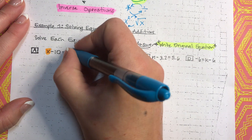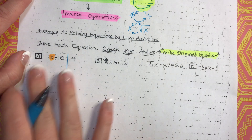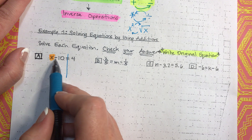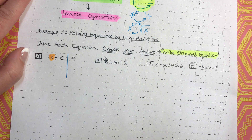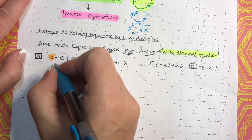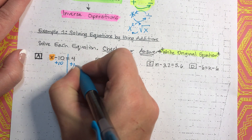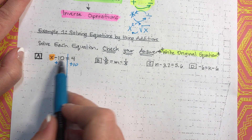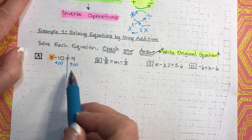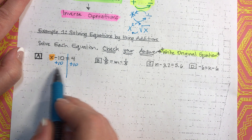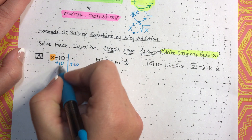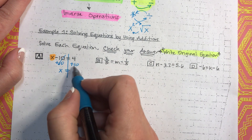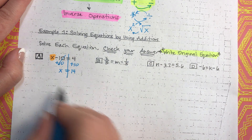I like to look at this equation as two different halves — this is one half, this is the other. You want x by itself. Right now there's a minus 10 on this side, so we have to do the inverse operation of subtraction, which would be addition. So, we're going to add 10 to both sides. If you do something to one side, you have to do it to the other side as well to keep it equal. Negative 10 plus 10 — those cancel. We're left with x by itself. 4 plus 10 is 14. And there's our answer — that is our solution.